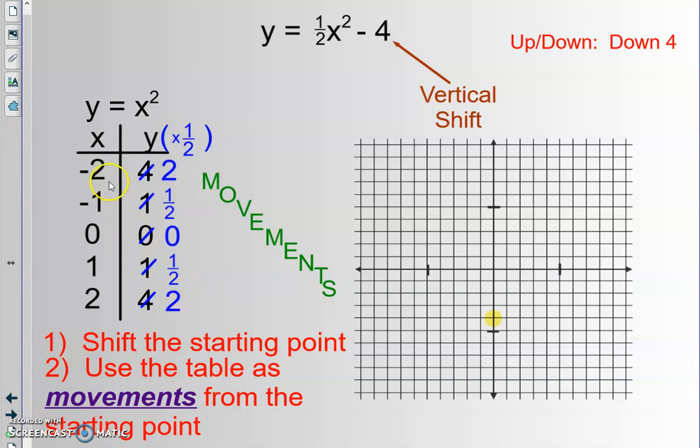And so what I'm going to do is I'm going to plot these. Again, these are movements. So from my new origin, I'm going to go left 2, up 2. From my new origin, I'm going to move left 1, up a half. From the new origin, 0, 0. From my new origin, right 1, up a half. And from my new origin, right 2, up 2. And you get basically this parabola.